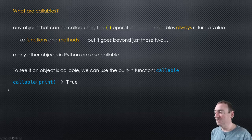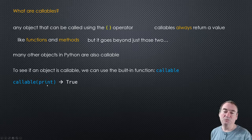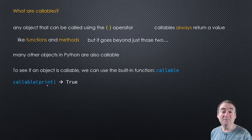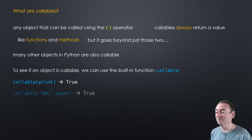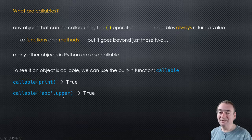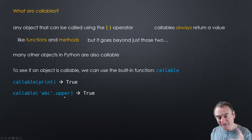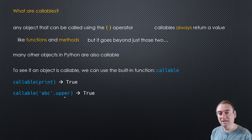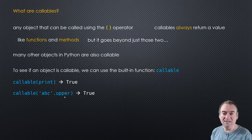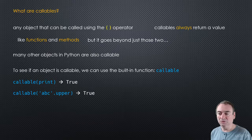For example, we can say callable of print. Well, print is a function, so it is callable. You say print with parentheses and maybe something inside - so it's true, it is a callable. Same thing with a string - strings have methods. So if you take abc.upper and put your parentheses, that's going to call the upper method on that string, changing abc lowercase to abc uppercase. So it is also a callable.